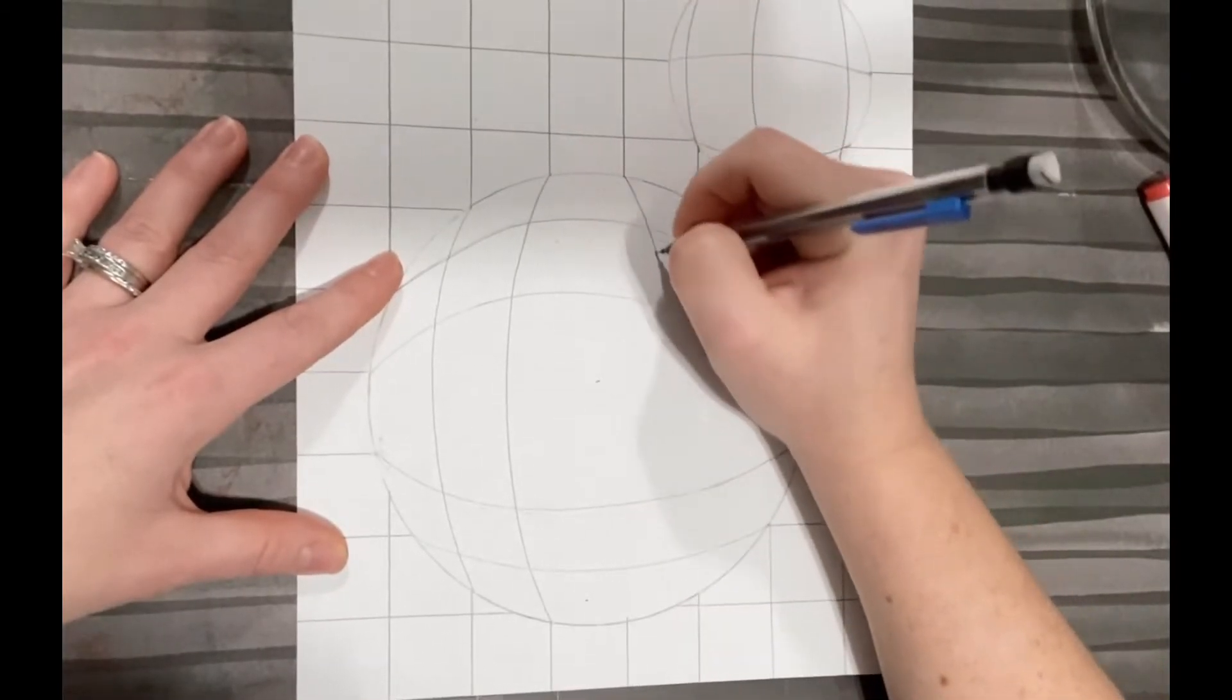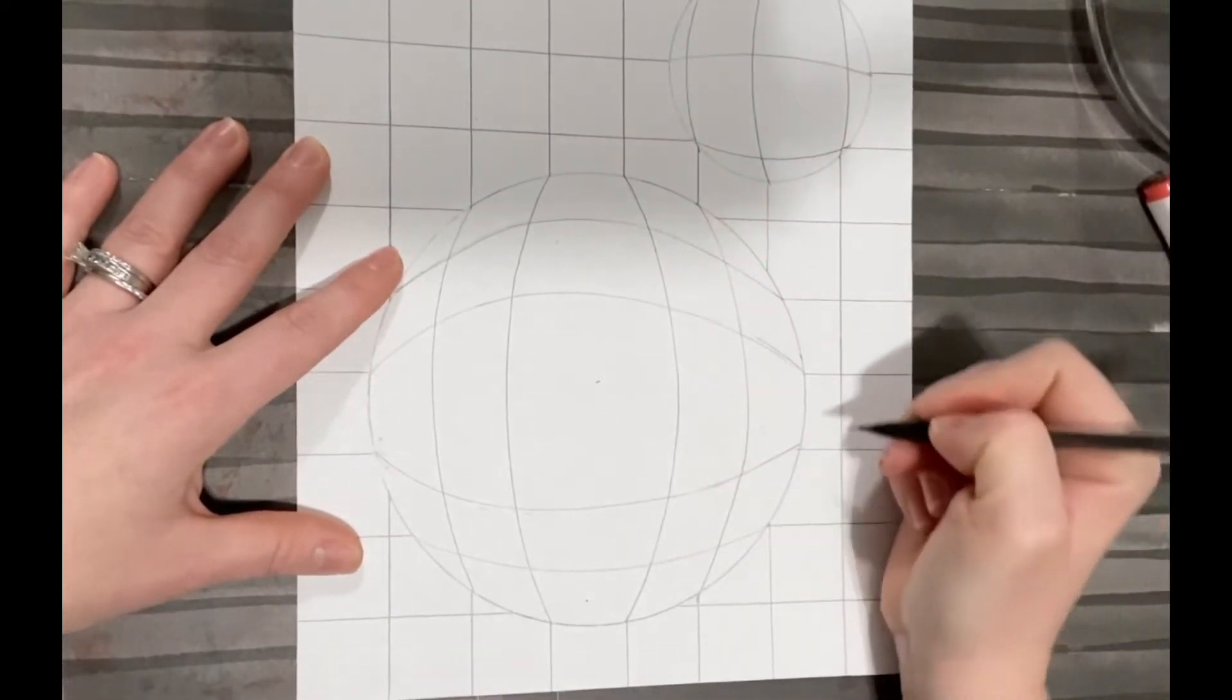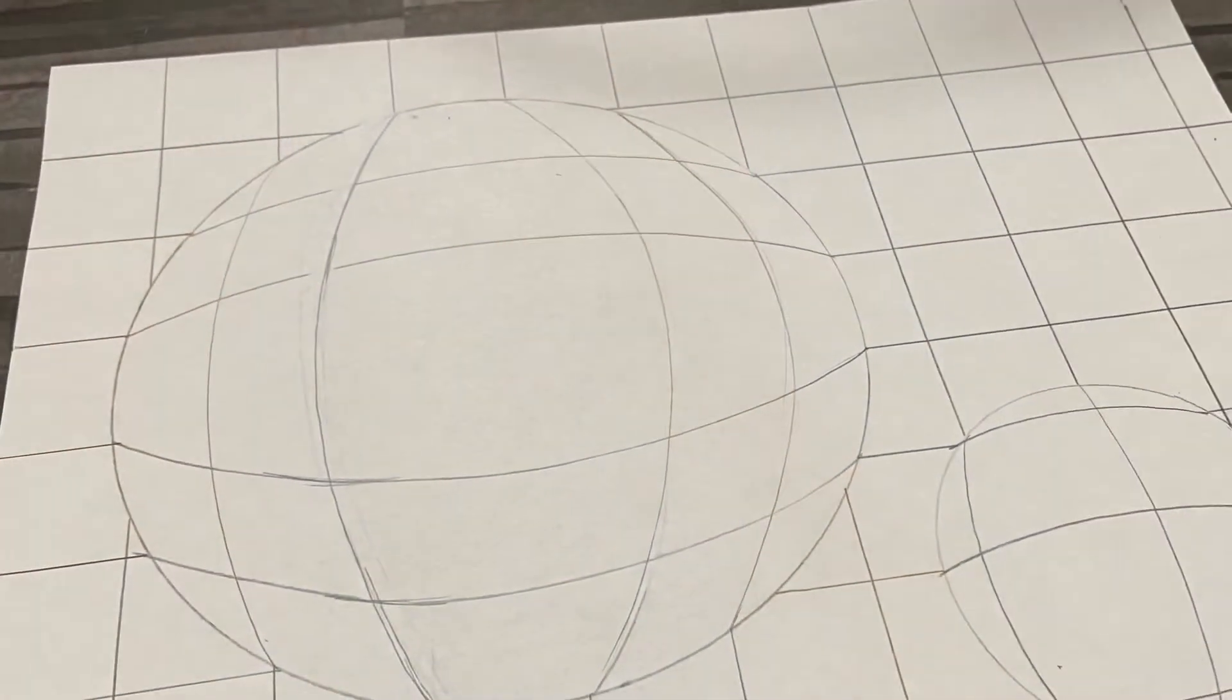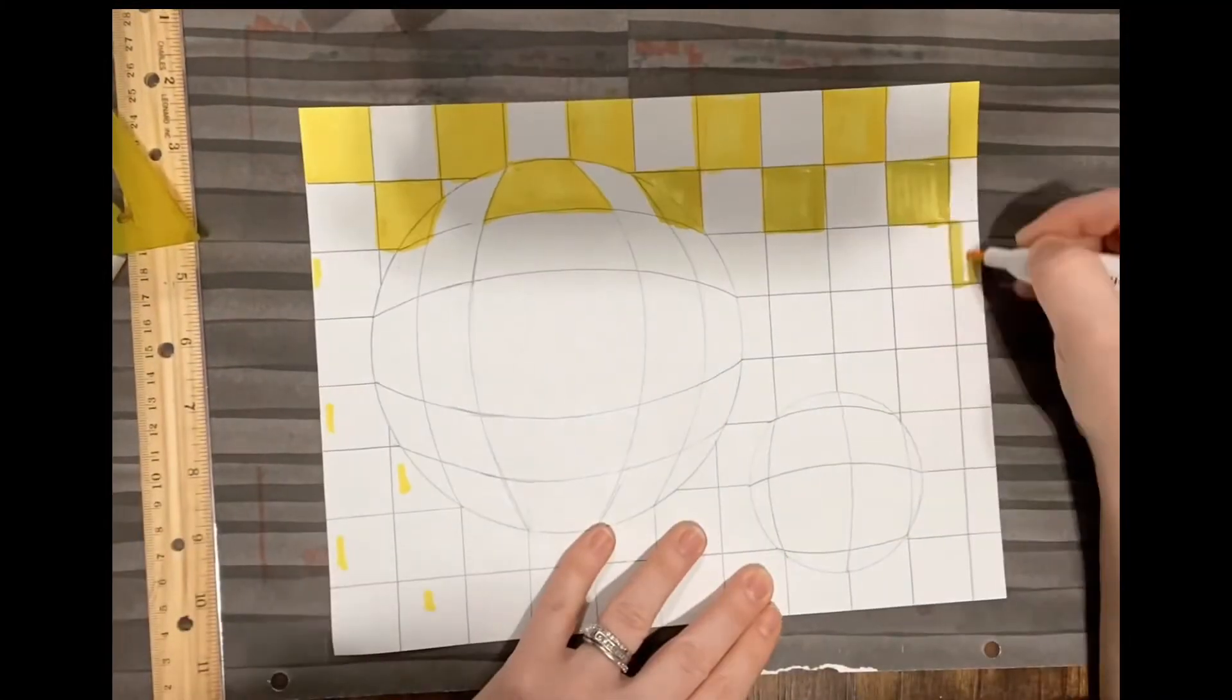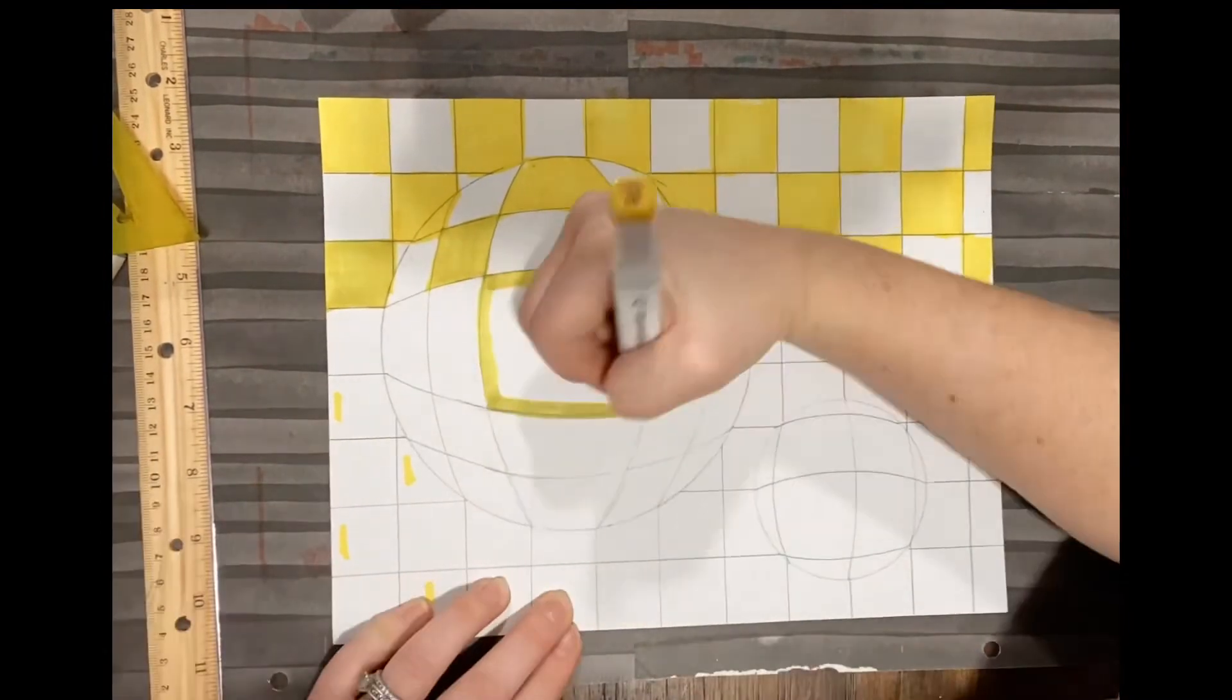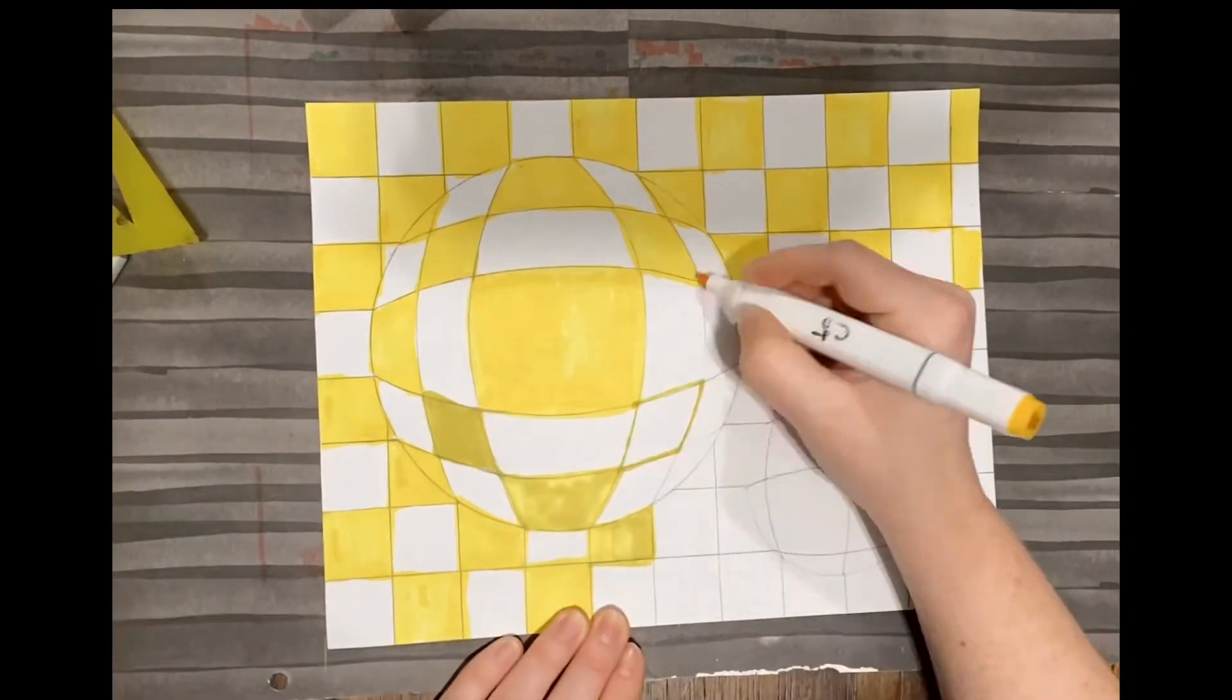You're going to use two colors—you can use markers like me or colored pencils, crayons, whatever you have—and you will alternate your color pattern like a checkerboard, going every other one. When you get to a new row, start with the opposite color that you started with before.